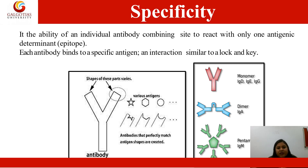Each antibody binds to a specific antigen and the interaction is similar to that of a lock and key. As shown in the figure, there is an antibody having a Y shape and different epitopes or various antigens. Antibodies that precisely match antigen shapes create an antigen-antibody complex. There are different types of antibodies: IgD, IgE, IgA, and IgM. IgD, IgG, and IgE have a Y shape; IgA is a dimer and IgM is a pentamer.